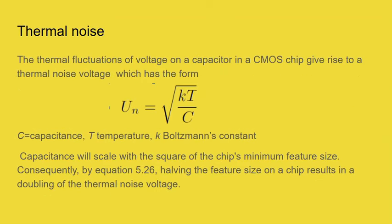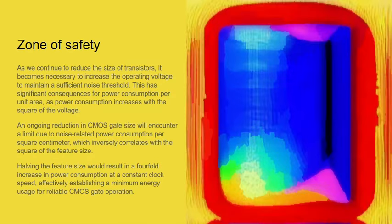Lowering gate voltages compromises gate reliability due to thermal noise. The specific form of noise follows a square root law — the noise voltage is proportional to kT over the capacitance. So the smaller the capacitance, the higher the relative thermal noise voltage. Capacitance scales with the chip's minimum feature size, so halving the feature size results in a doubling of the thermal noise voltage, because area goes down by four. If we continuously reduce the size of transistors, we would have to increase the operating voltage, and power consumption rises as the square of the voltage.